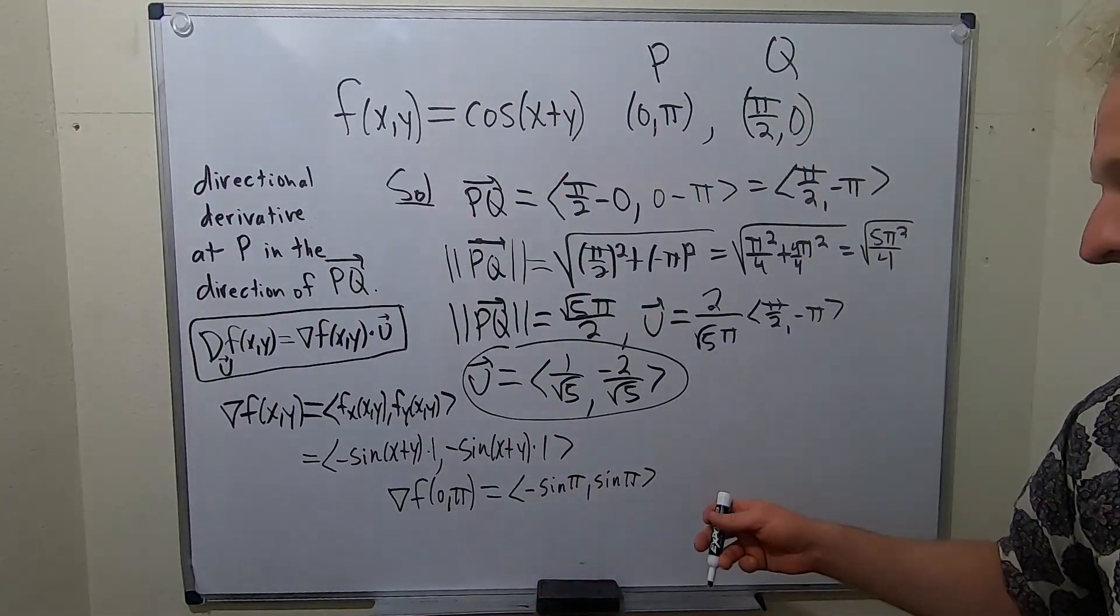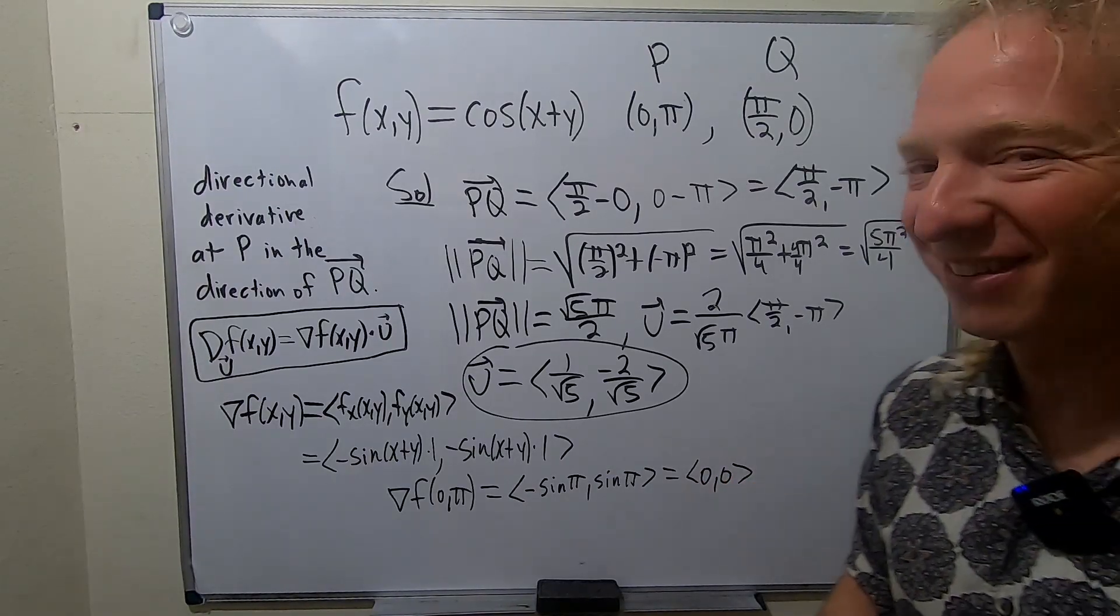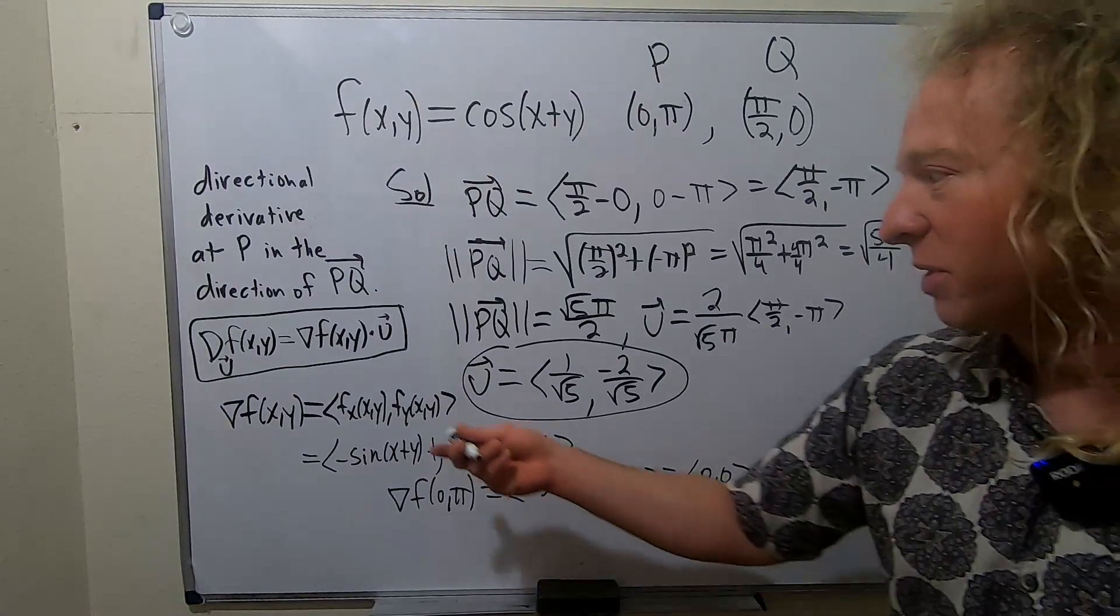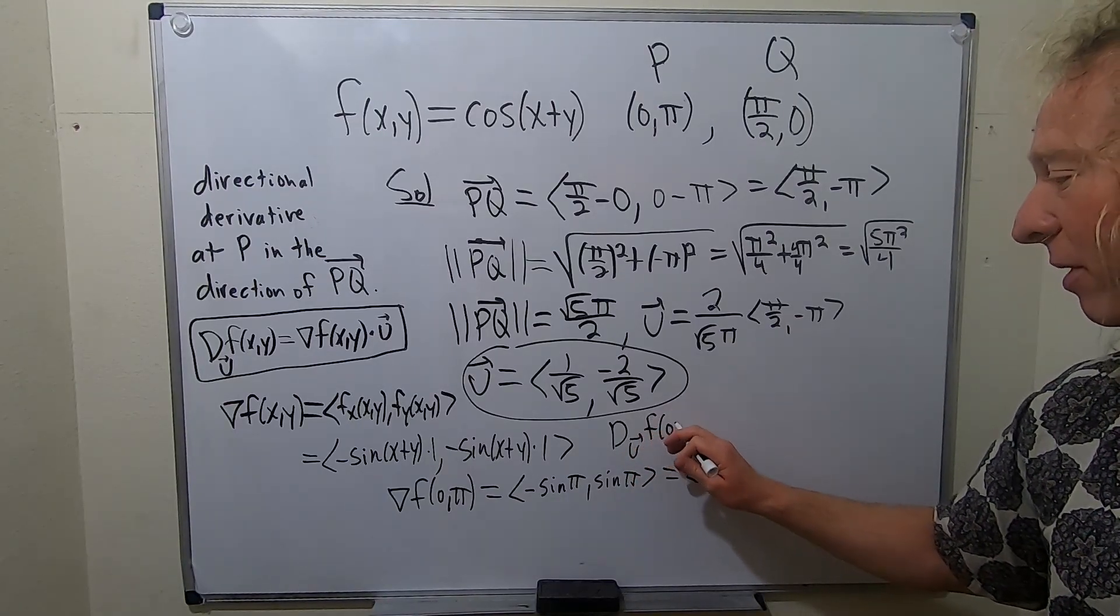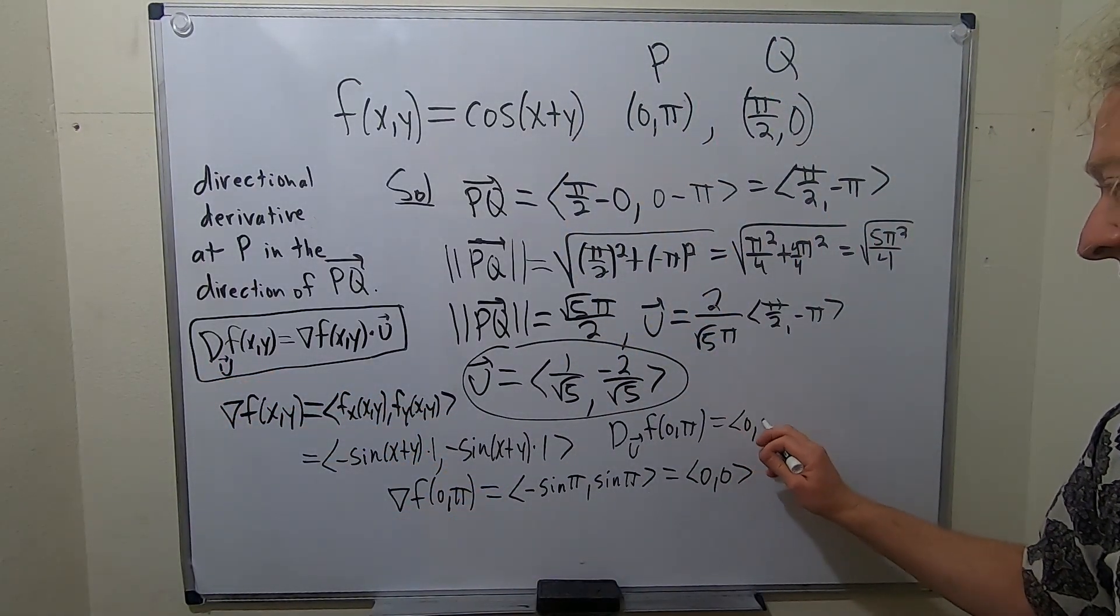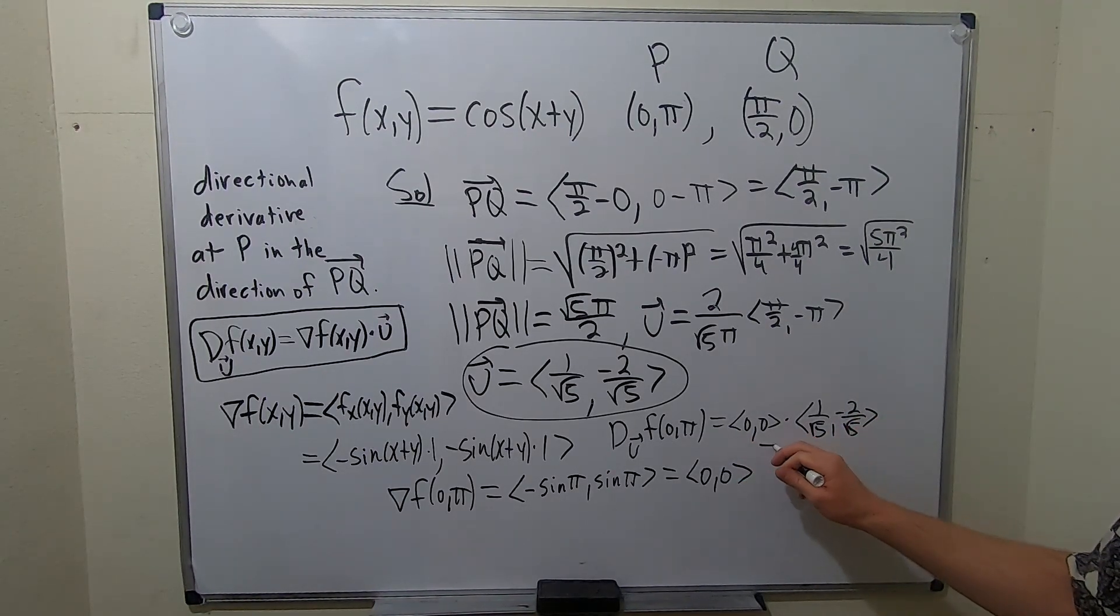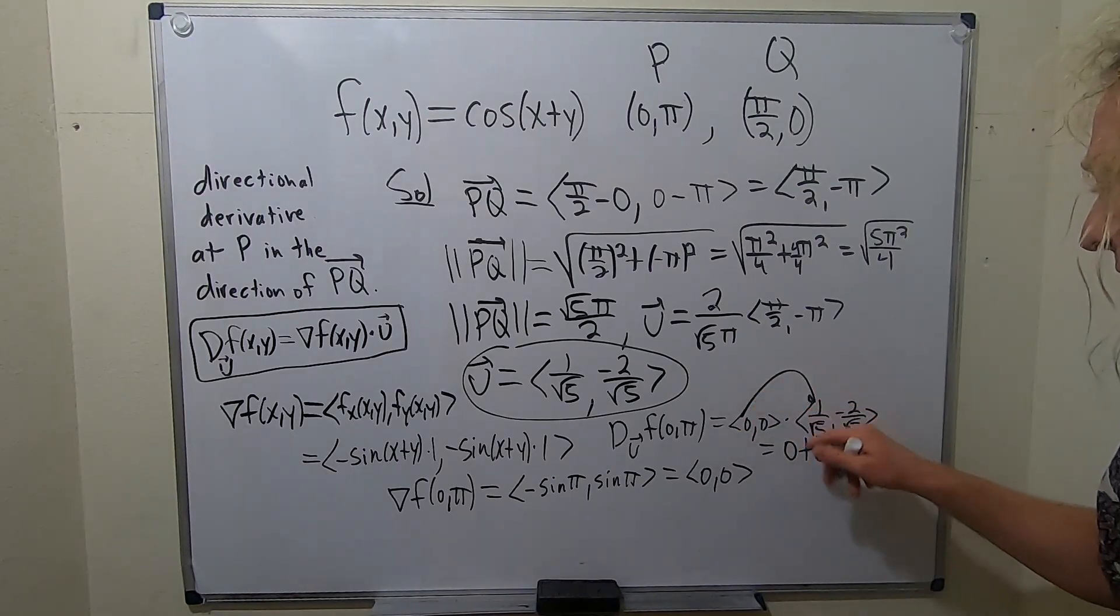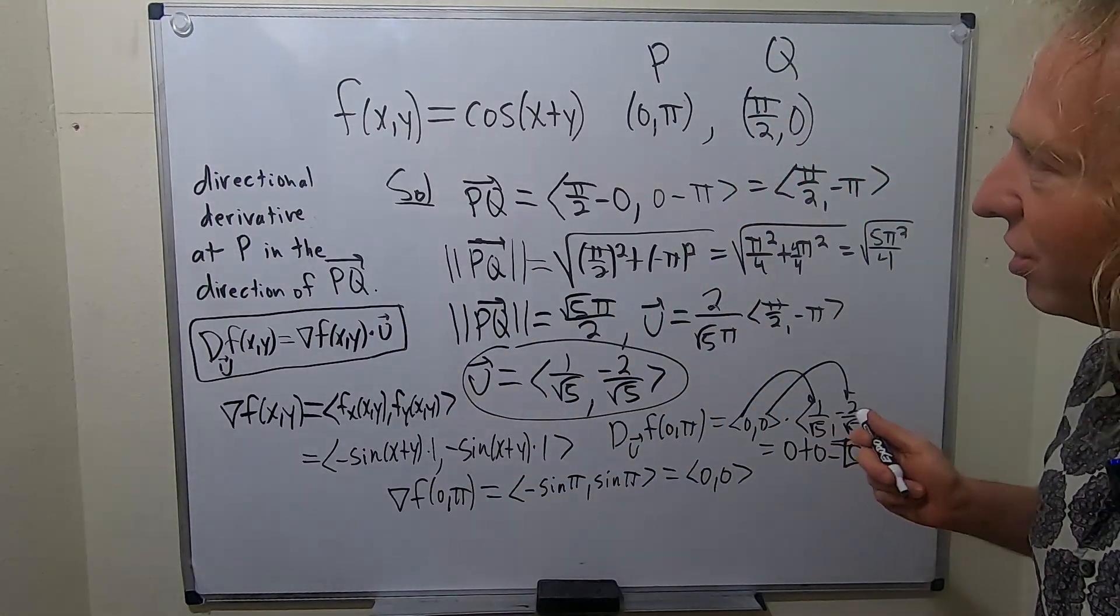But the sine of π is 0. So we just end up with (0,0). Should have seen that coming. When we take the dot product, the directional derivative Du at (0,π) using this formula is going to be this dotted with this. Basically you just do 0 times this, so you get 0 plus 0 times this, so you get 0. You do this times this plus this times this - that's how you do dot products. So the directional derivative at P in the direction of PQ is actually 0.